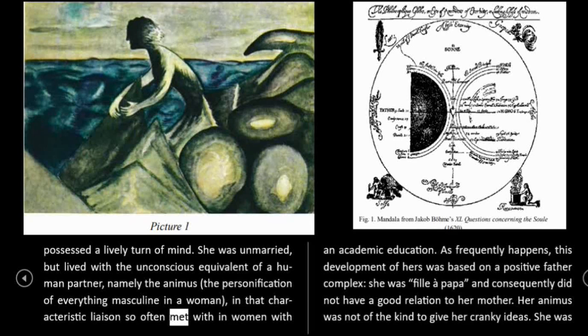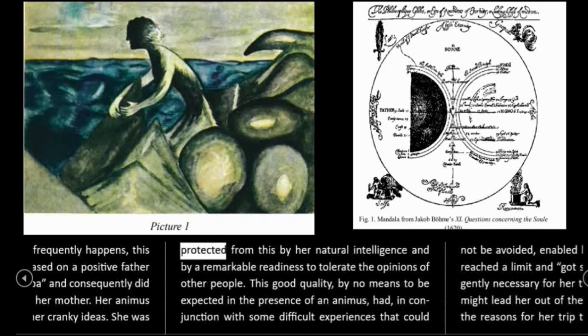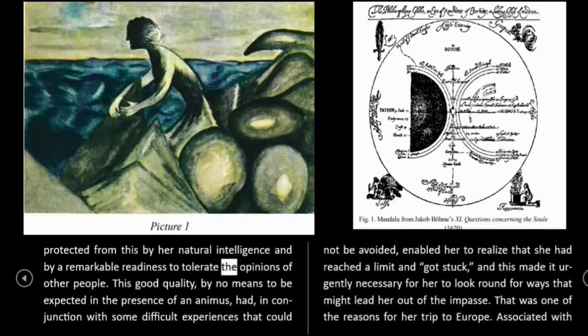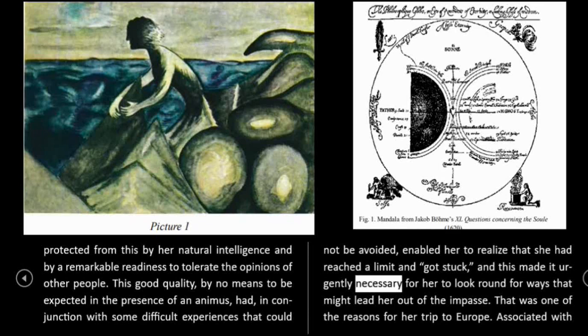As frequently happens, this development of hers was based on a positive father complex. Her animus was not of the kind to give her cranky ideas. She was protected from this by her natural intelligence and by a remarkable readiness to tolerate the opinions of other people. This good quality had, in conjunction with some difficult experiences that could not be avoided, enabled her to realize that she had reached a limit and got stuck. And this made it urgently necessary for her to look round for ways that might lead her out of the impasse. That was one of the reasons for her trip to Europe.